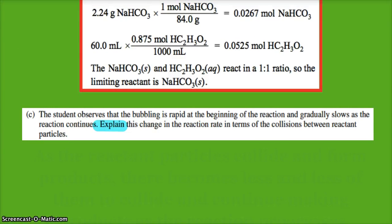The student observes that the bubbling is rapid at the beginning and then gradually slows down. Explain the change in reaction rate in terms of collisions between reactant particles. Well, just thinking rationally, when a reaction first starts, there's lots of reactive particles to collide with enough energy and in the right orientation to make products.